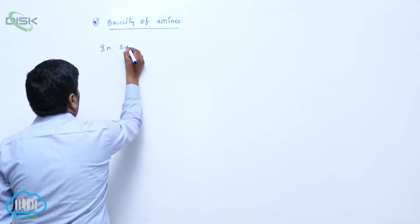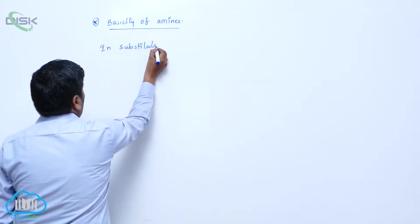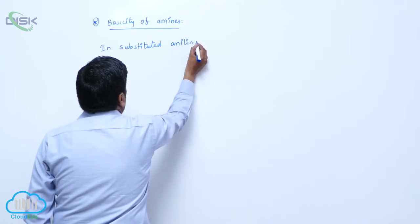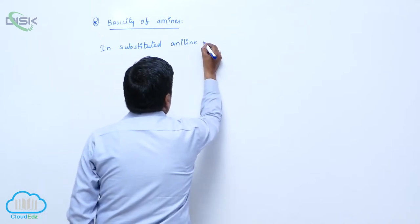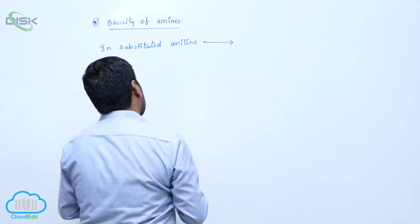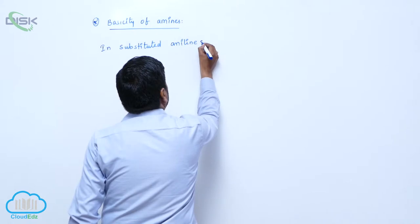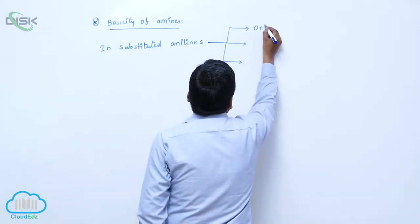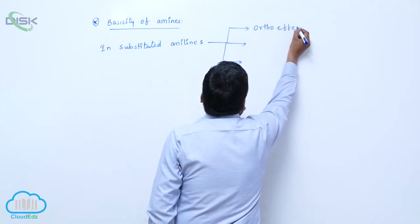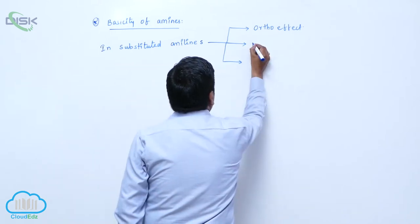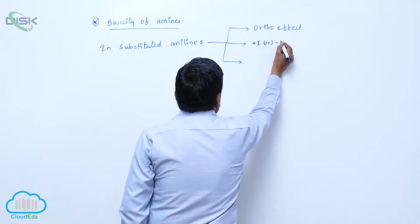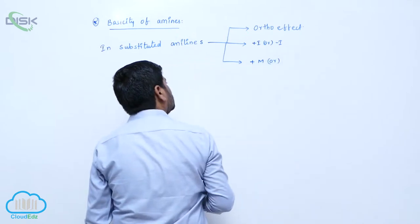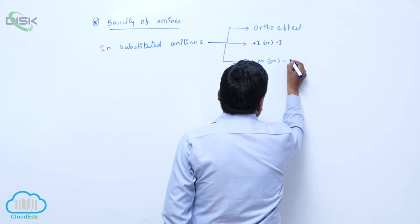In N-substituted anilines, we consider three factors: one is the ortho effect, second is the +R or -I effect, and third is the +M or -R/+I effect. These are the factors we should consider.